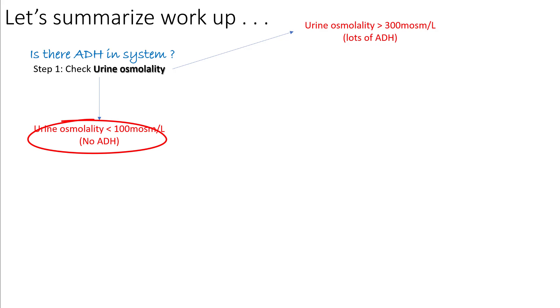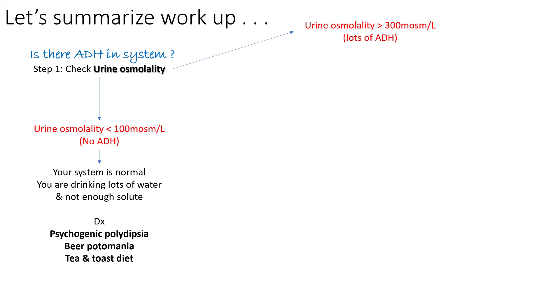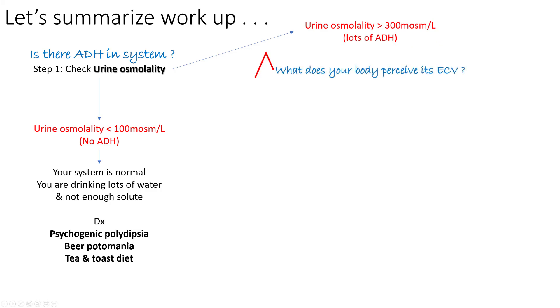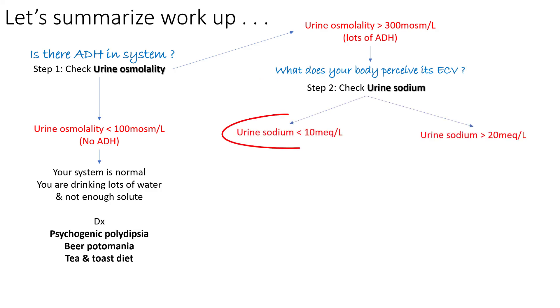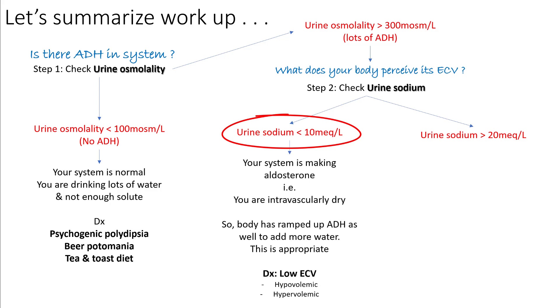Let's summarize the workup for hyponatremia. The first question you ask is: is there any ADH in the system? For this you check urine osmolality. If urine osmolality is low, there is no ADH — an appropriate response meaning your system is working normally, you are drinking a lot of water with not enough solute. You would think about diagnoses like psychogenic polydipsia, beer potomania, and tea-and-toast syndrome. If urine osmolality is more than 300 milliosmoles per liter, ADH is present, and now you ask what does your body perceive its effective circulating volume to be. For this you check urine sodium. If urine sodium is low — less than 10 milliequivalents per liter — your system is making aldosterone, hanging on to sodium, meaning you are intravascularly dry. Your body has ramped up ADH secretion adding more water — this is an appropriate response.